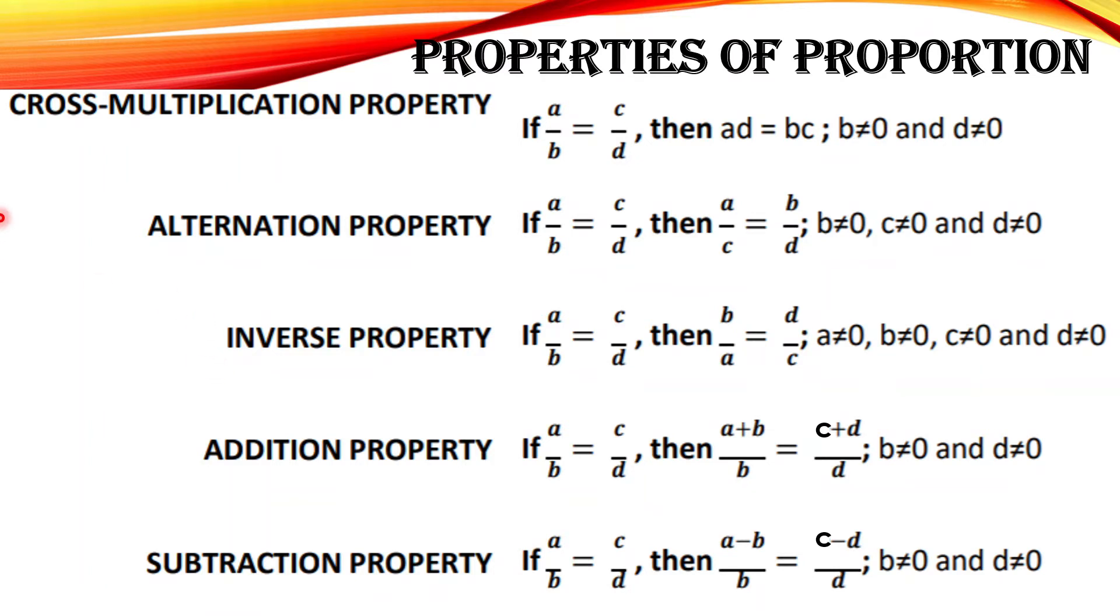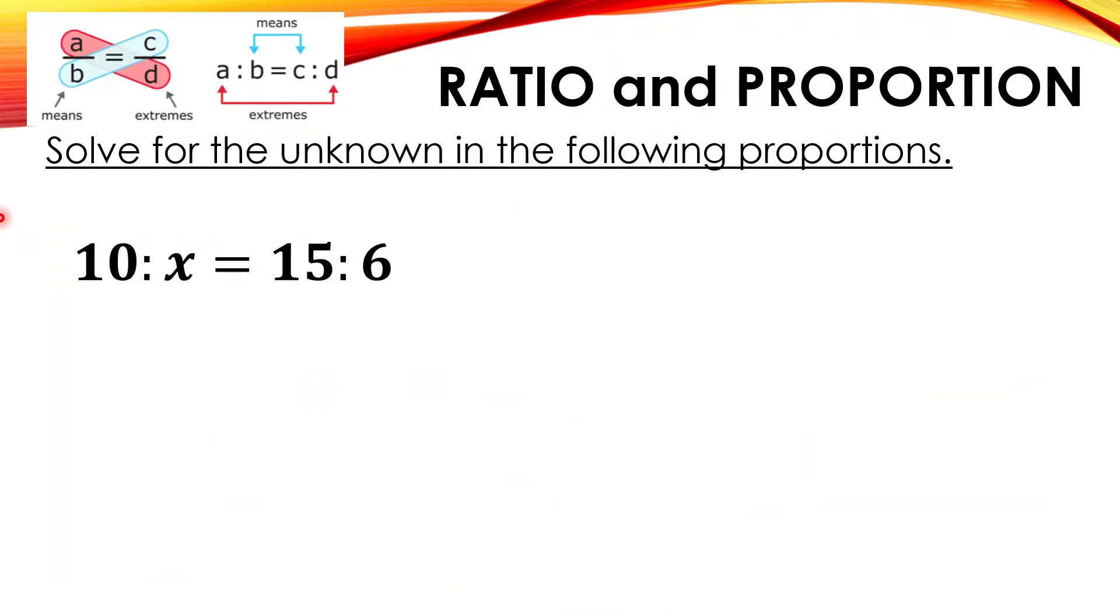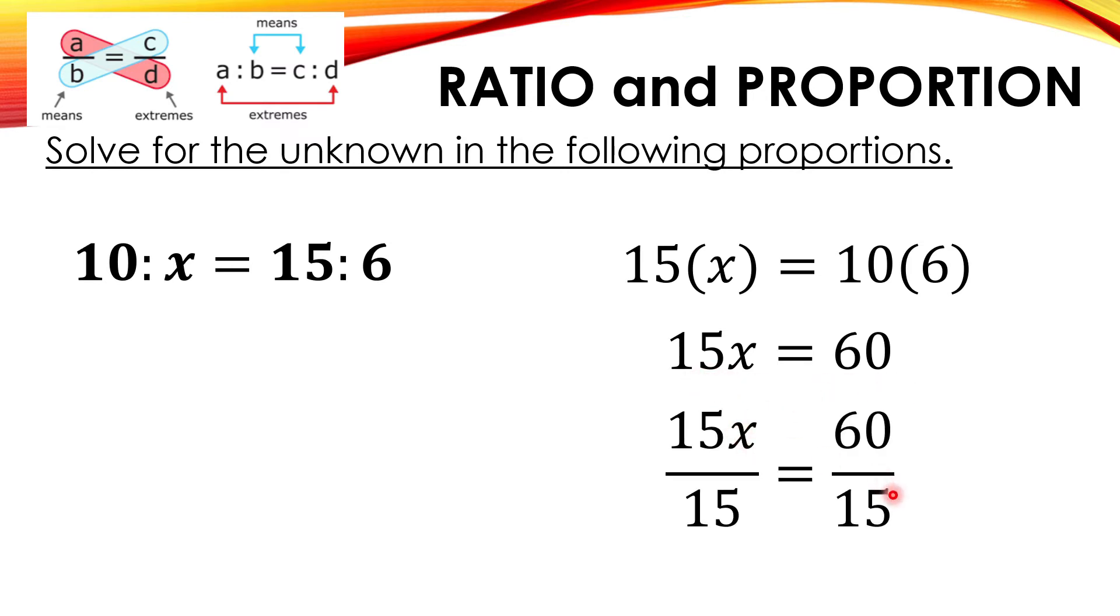Solve for the unknown in the following proportion. I'll give you one example here. We have 10:x = 15:6, so multiply the means then the extremes. x times 15, that is 15x, is equal to the extremes 10 times 6. Then simplify: 15x is equal to 60. Since the coefficient of x here is 15, divide both sides by 15 and simplify. 15x divided by 15 is equal to x, then 60 divided by 15 is equal to 4.